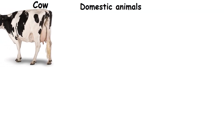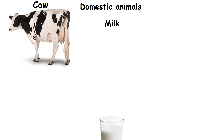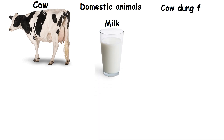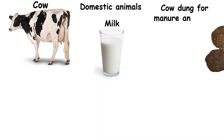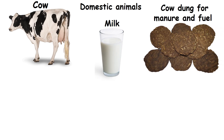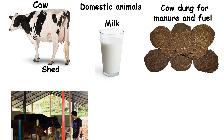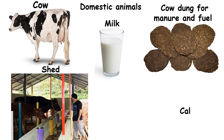Let us see about some domestic animals. Cow: It gives milk and its dung is used as manure and fuel. The farmer provides them a home called a shed. Its young one is called a calf.